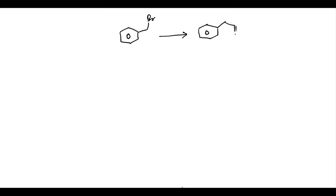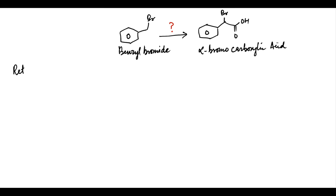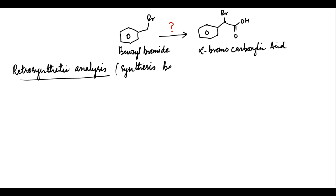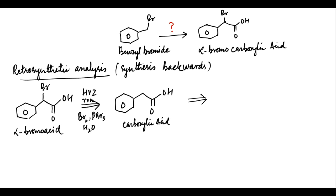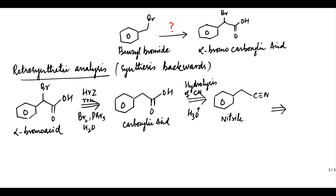Let us identify the reagents that should be used to accomplish the following transformation. The starting material is benzyl bromide and the target product is an alpha-bromo carboxylic acid. We will do the retrosynthetic analysis of the target product — that is, synthesis backwards. The product alpha-bromo acid can be made from the corresponding carboxylic acid via bromination at the alpha position, that is via HVZ reaction; for that, we need to treat the acid with Br2 in the presence of PBr3, followed by hydrolysis. The carboxylic acid can be prepared via hydrolysis of the corresponding nitrile. The nitrile can be made from benzyl bromide via an SN2 process in which cyanide, for example sodium cyanide, is used as a nucleophile.